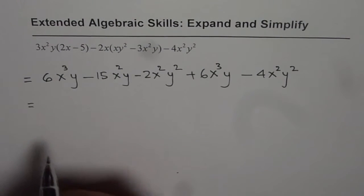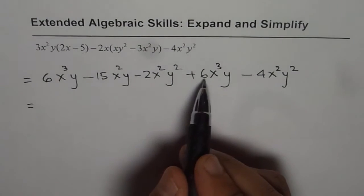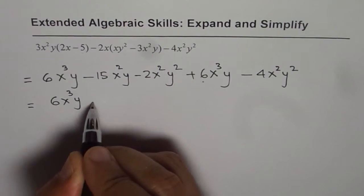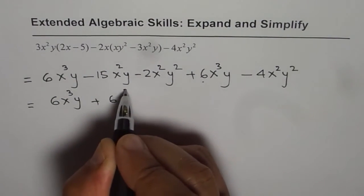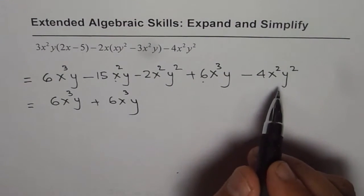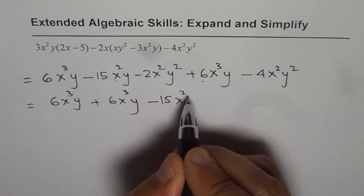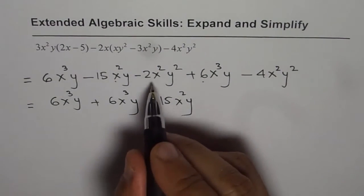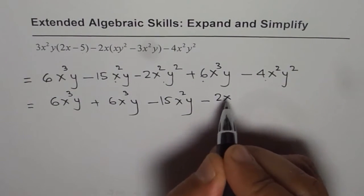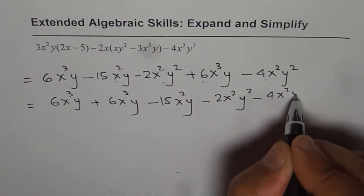Now let us look for like terms. x³y, we have x³y here. So these are the two like terms: 6x³y plus 6x³y. x²y, we do not have another, so we'll just write it as such: 15x²y. x²y², we have two terms here. We'll just copy them: minus 2x²y², minus 4x²y².